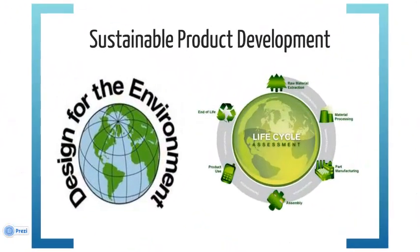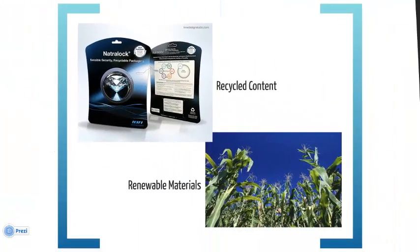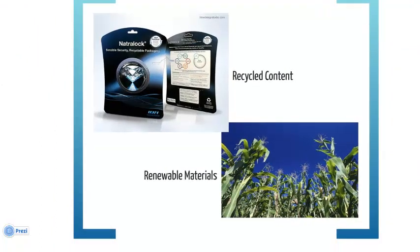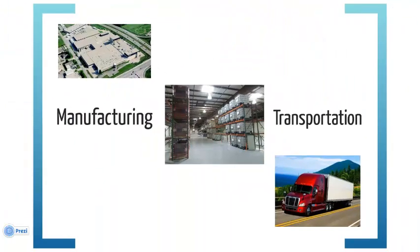Sustainable product development utilizes various tools such as design for the environment and life cycle assessment to integrate environmental and sustainability considerations into the product design process. As a member of the new product development team, you need to consider the materials and chemicals you select and understand the life cycle impacts of these choices. You need to optimize the use of the materials through lightweighting and integrating recycled and renewable materials in the design. You need to consider the end of life of the product and design for easy recycling or reuse. Understand how the choices you make in the design will impact the manufacturing process and how the products or materials are transported.